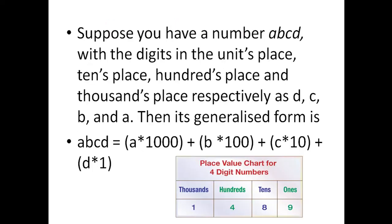Now see the picture here showing how a four-digit number has place values. The number 1489 is given as an example: 9 is in ones place, 8 is in tens place, 4 is in hundreds place, and 1 is in thousands place.